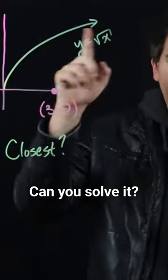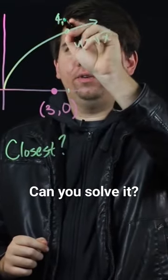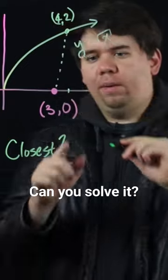You know lots of points on this function. For example, if you go over to 4, you have the point (4, 2). And so you might consider how far away is (4, 2) from (3, 0).